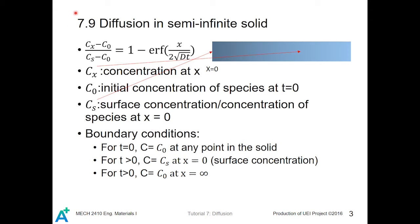The boundary conditions for this equation are: first, at time equal to zero, C equals C0 at any point in the solid — meaning the concentration is uniform throughout. Second, at x equal to zero (the boundary), the surface concentration is kept constant at Cs. Third, at x equal to infinity, C equals C0. The term 'erf' refers to the error function, which will be introduced in the next slide.